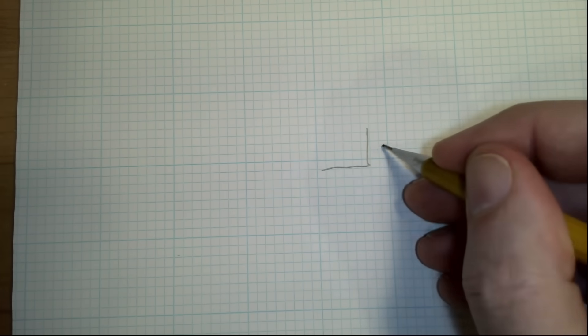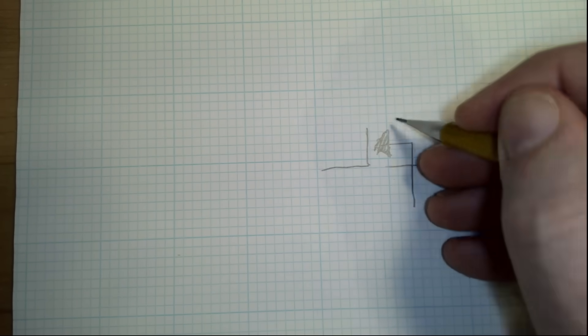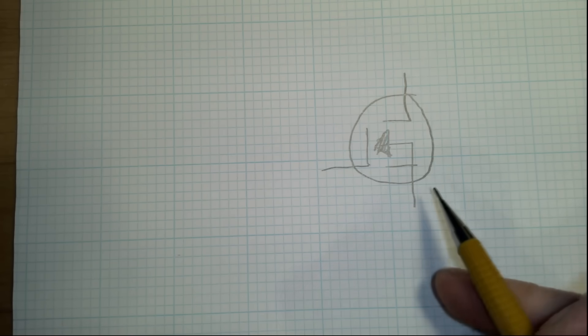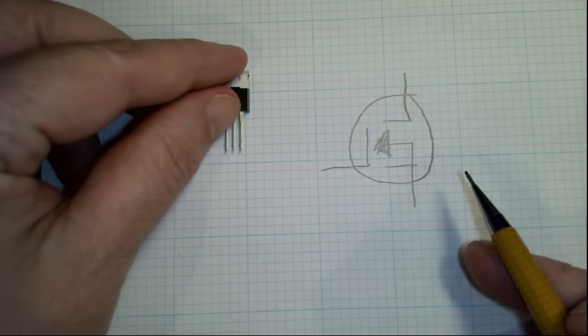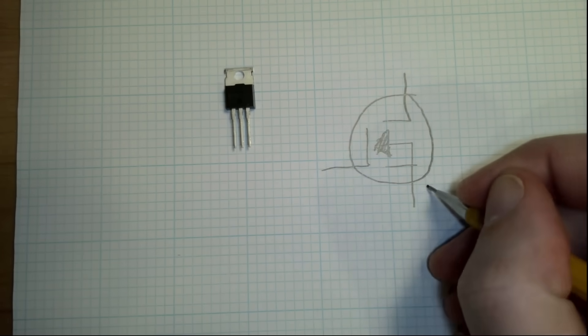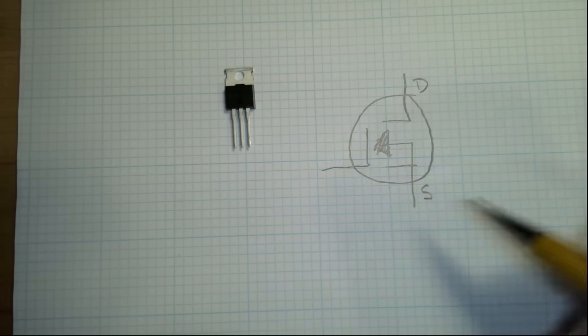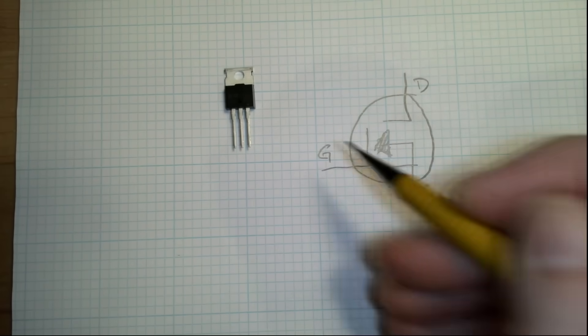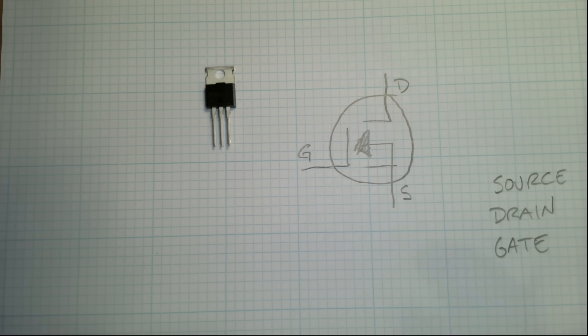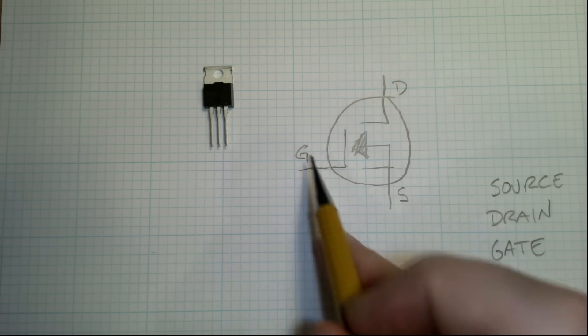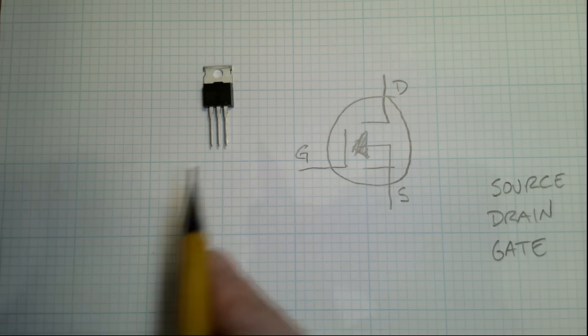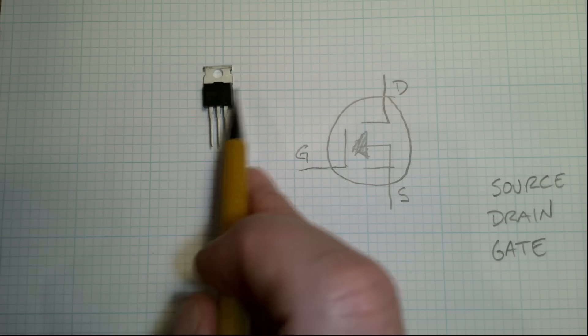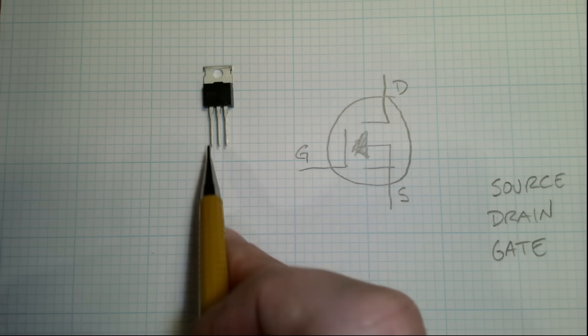The symbol for a transistor on a schematic is fairly straightforward. It will usually look something like this. And then it has three legs on it, as you saw here. And they'll be marked S for Source, D for Drain, and G for Gate. Now how do these equate to these pins? On this style, the square looking thing with three legs,